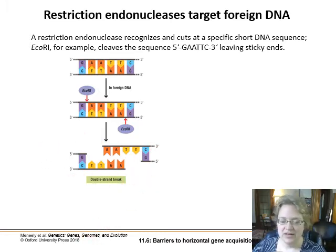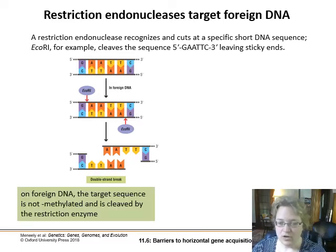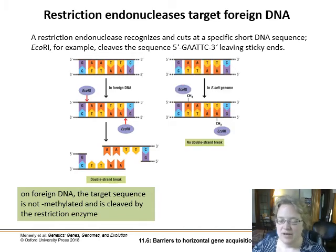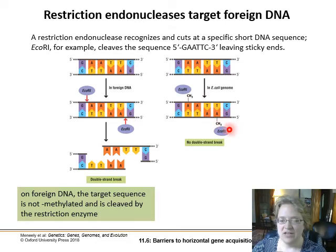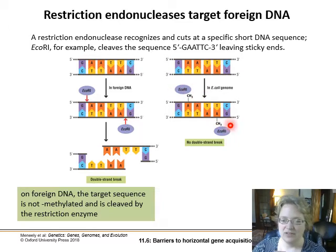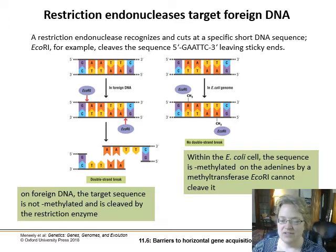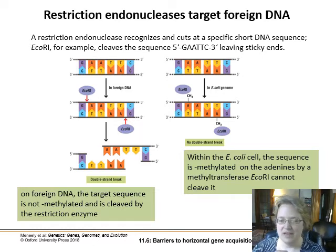How come bacteria aren't constantly chopping up their own chromosomes? On foreign DNA these sequences are not methylated — there's no epigenetic protection. But in the E. coli genome, these sequences have little methyl groups attached to the phosphodiester backbone, and EcoRI cannot grab onto that. It can't cut at that sequence because it's protected by methylation, so no double-strand break occurs.